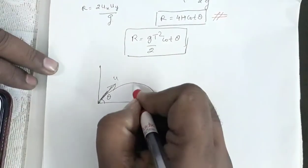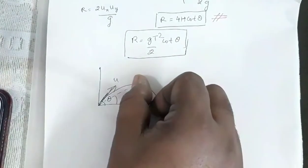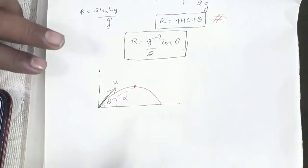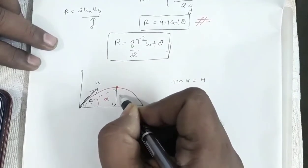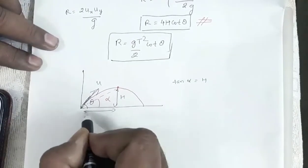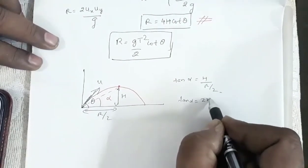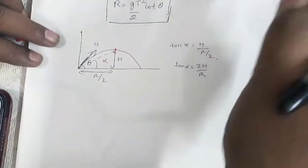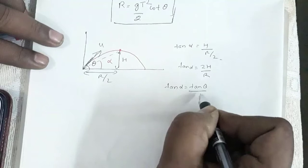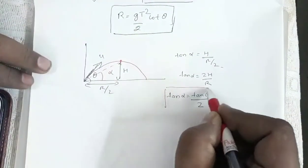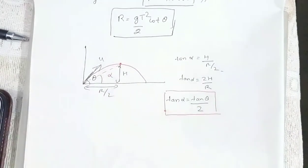Suppose the angle subtended by the highest point of the trajectory with respect to the point of projection is alpha. Then tan α equals the height h divided by half the range R/2, which gives tan α = 2h/R. Substituting the values of h and R, we get tan α = tanθ / 2, where θ is the angle of projection.